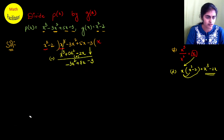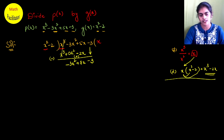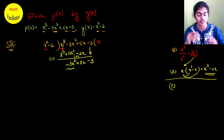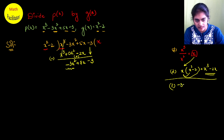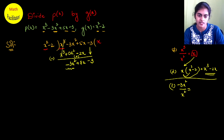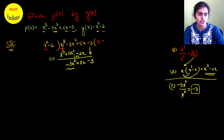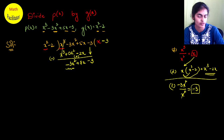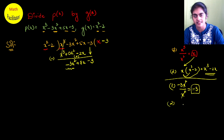When you get your new dividend, repeat step one. Take the first term of the new dividend, -3x², and divide it by the first term of the divisor, x². The x² cancels and you have -3. Since it has a minus sign, you write -3 directly in the quotient. Don't worry about the sign — it comes automatically.